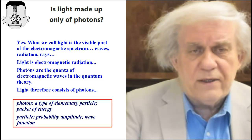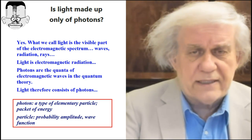Here's an analogy for what he's saying there. A Klingon comes over and asks, what is a cat? Mr. Toth says, a cat is an animal. What is an animal? An animal is all love. What is love? It's an equation. Numbers and variables. So the Klingon says, so a cat is ultimately a bunch of numbers? And he said, well, you have to go to college to really understand it. That's the type of answers these people do. They always leave you hanging in the air because they never answer the question.